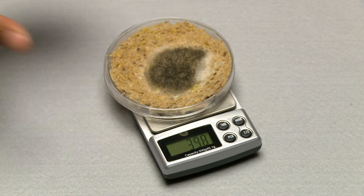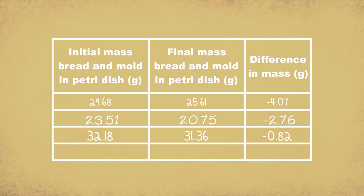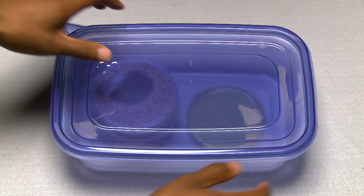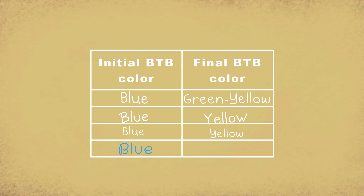Now it's time to weigh our bread now that we've got plenty of moldiness. Here are our mass changes. We started with 39.5 grams of bread, and now we're down to 37.6 — that's a loss of 1.9 grams. And the BtB changed from blue to yellow. This is very similar to the results from the sample data from another classroom.